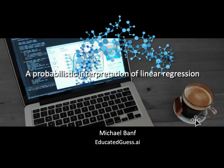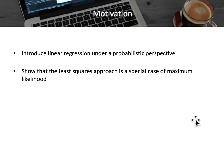In this brief tutorial we're going to look at linear regression from a probabilistic point of view. It's actually quite interesting since we can show that the least squares approach constitutes a special case of maximum likelihood.